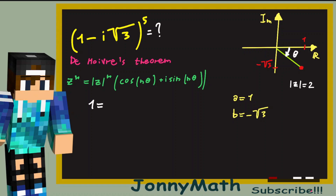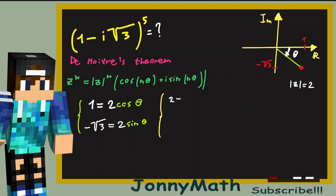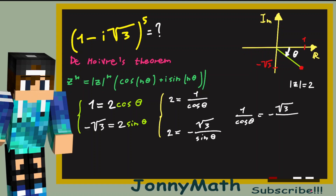Notice that 1 equals the modulus (which is 2) times cos θ, and -√3 equals 2 times sin θ. We can use these two equations to find θ: from these, 1/cos θ = 2 and -√3/sin θ = 2, which gives us tan θ = -√3.